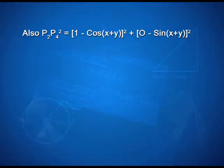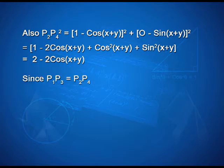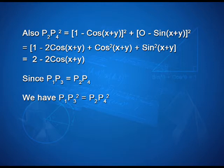Also, P2P4² using the distance formula can be written as (1 − cos(x+y))² + (0 − sin(x+y))². On expanding, we get 1 − 2cos(x+y) + cos²(x+y) + sin²(x+y), which simplifies to 2 − 2cos(x+y). Since the triangles are congruent, the distances are equal, so P1P3² equals P2P4².